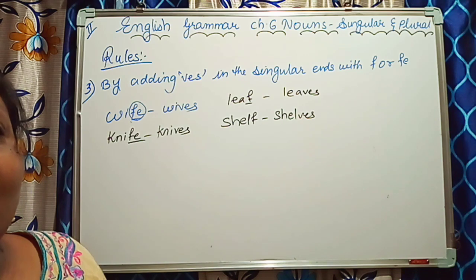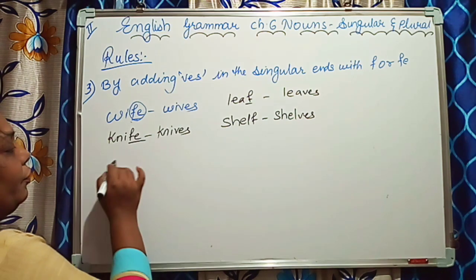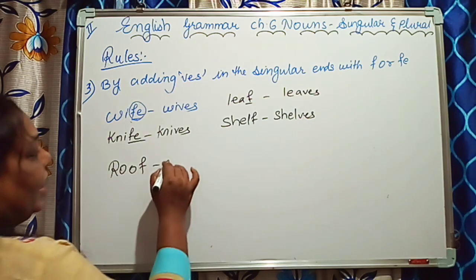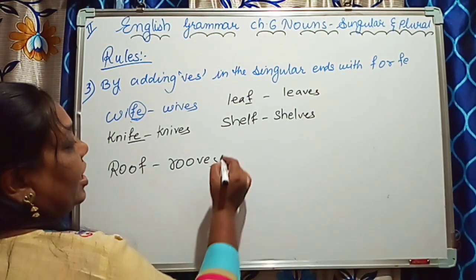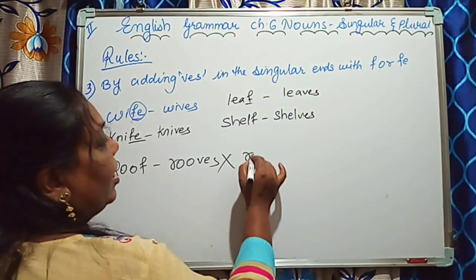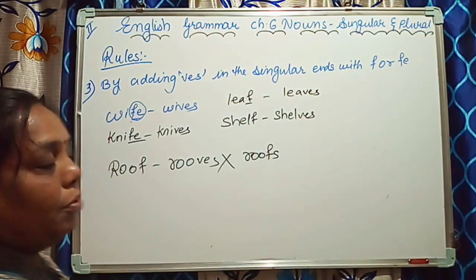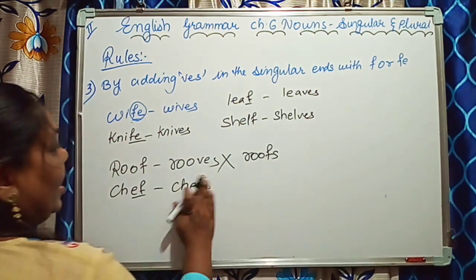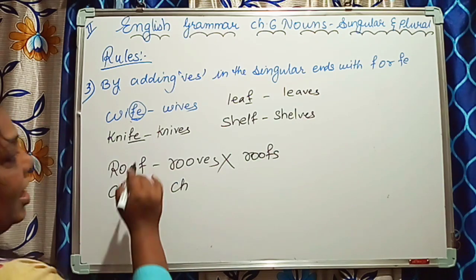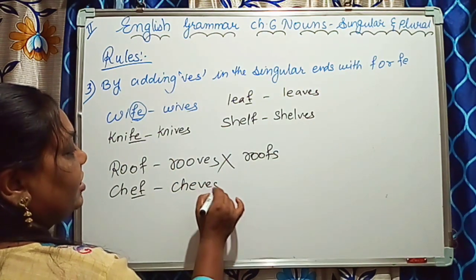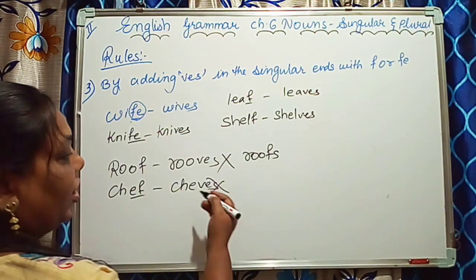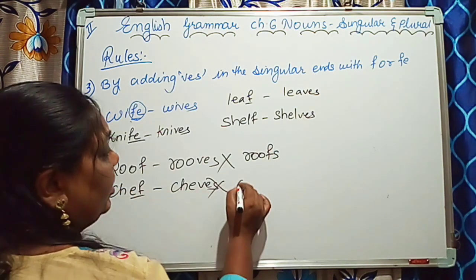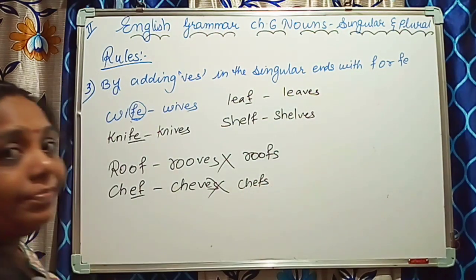However, if I write roof — it ends with F — but I will not write ROOVES, as that is a wrong spelling. So for roof I will just add S — roofs. Similarly, chief — if we cancel F and write CHIEVES, that is a wrong spelling and has no meaning. So for chief we just add S — chiefs.